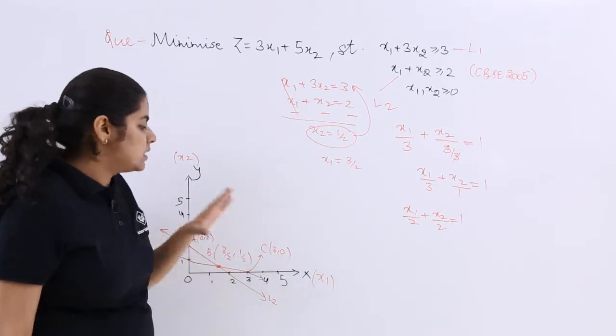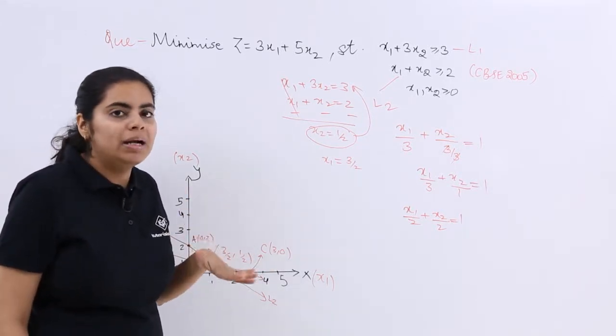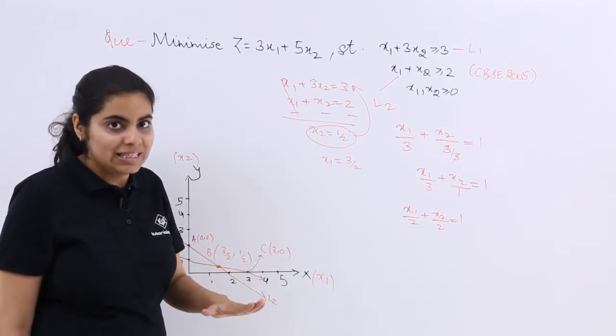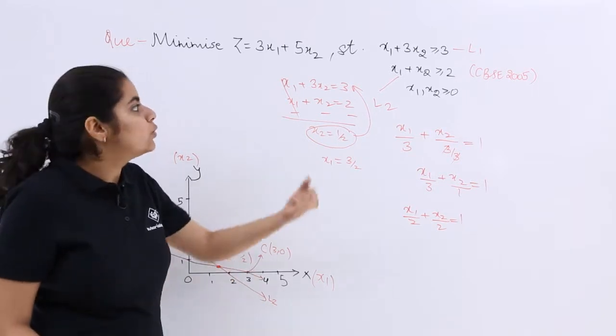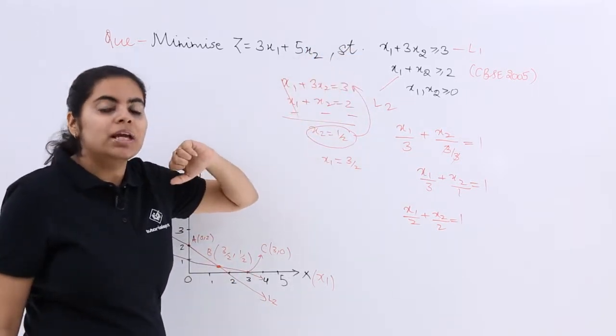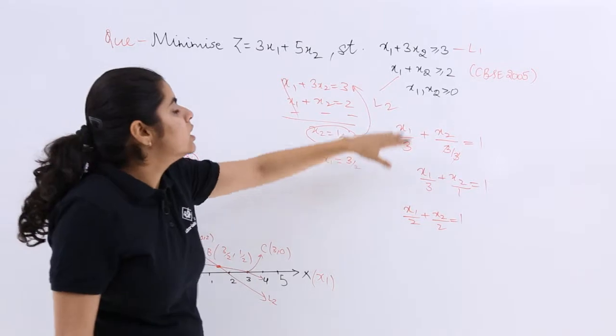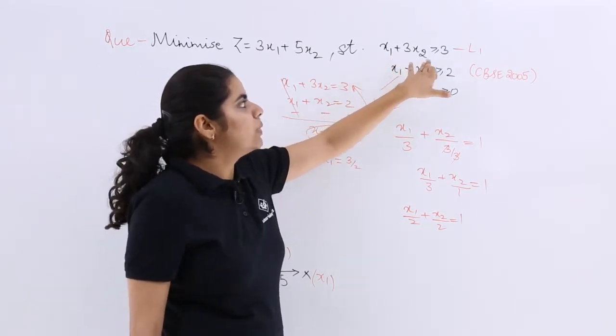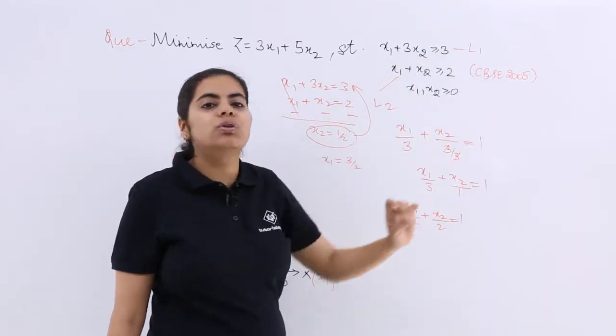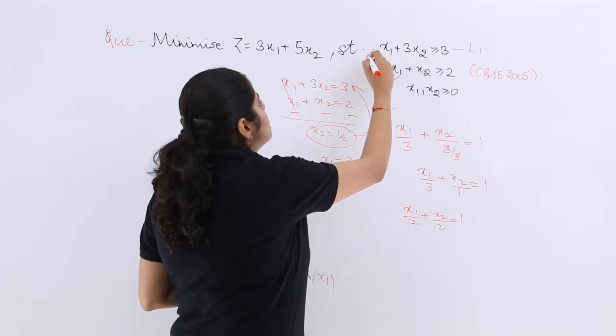Now, A, B, C are the intersection points. But our task is not only to find the intersection points, but to see what satisfies them in order to find the final solution. So if I put the origin, 0 plus 0 means 0 greater than or equal to 3. False. So origin doesn't satisfy.